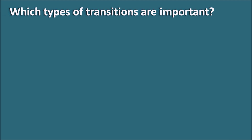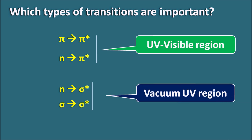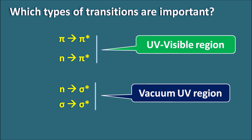Which types of transitions are important and influenced by the solvent? The important transitions are pi to pi* and n to pi*. We can also observe n to sigma* and sigma to sigma* transitions, but pi to pi* and n to pi* transitions are mainly observed in the UV-visible region, whereas n to sigma* and sigma to sigma* transitions are observed in the vacuum UV region. So the effect of the solvent on pi to pi* and n to pi* transitions is more important.